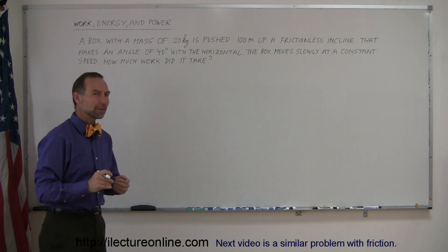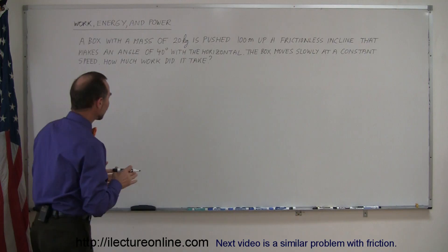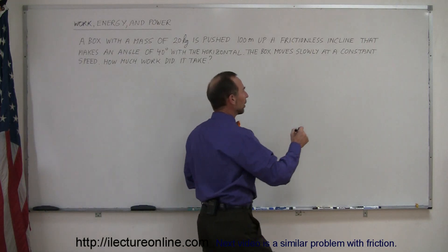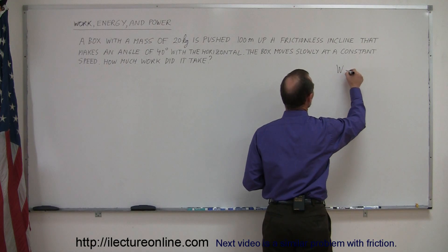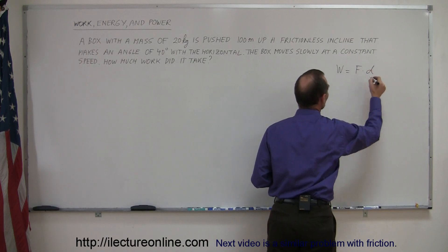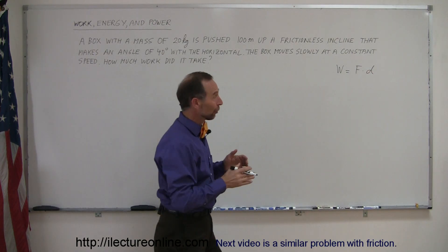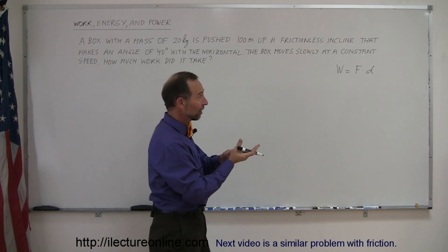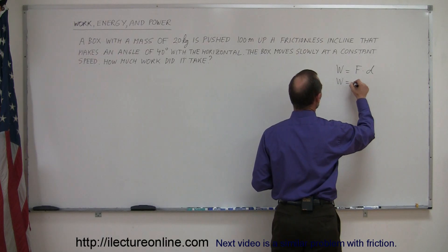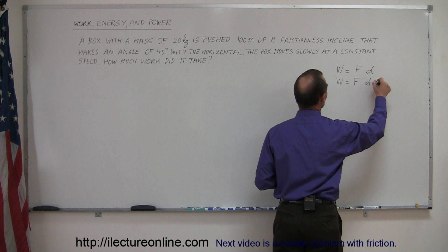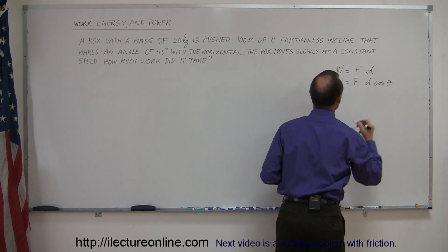I'm going to do this problem in two different ways. The first way uses the concept that work done equals force times distance, assuming the force and displacement are in the same direction. If not, we can say that the work done equals the force times the distance times the cosine of the angle between the two.